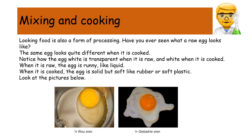Cooking food is also a form of processing. A raw egg looks quite different when it is cooked. Notice how the egg white is transparent when it is raw and white when it is cooked. When it is raw, the egg is runny like a liquid. When it is cooked, the egg is solid but soft, like rubber or soft plastic.